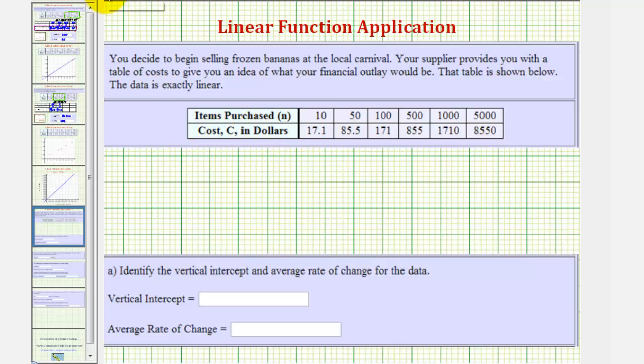We're told the data is exactly linear. It's important that we recognize this. Knowing the data is linear will help us determine the function rule for the cost in dollars, in terms of n, the number of items purchased.